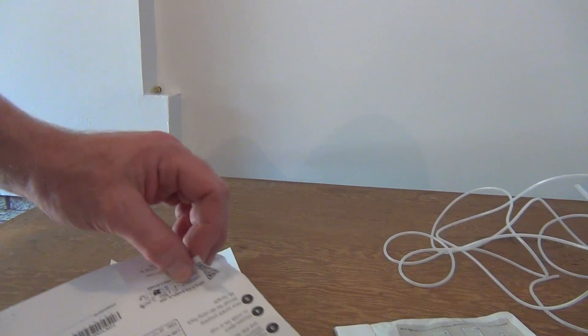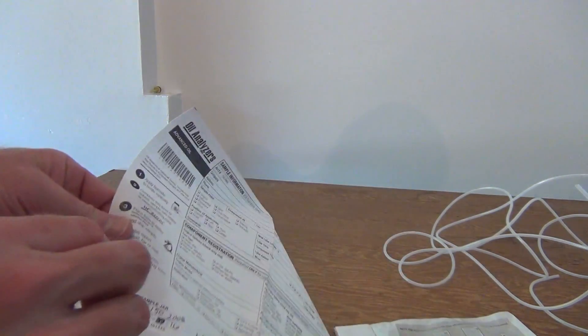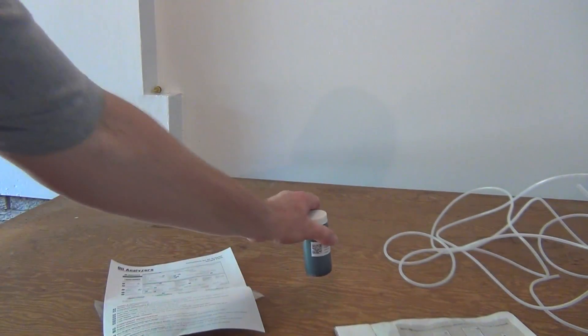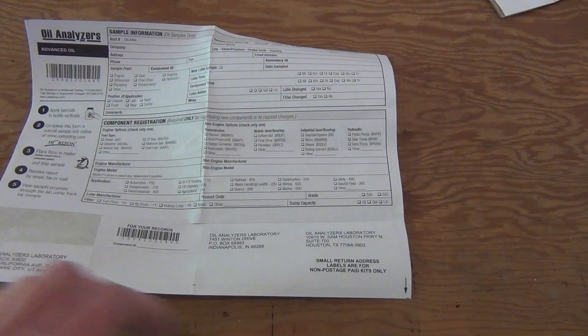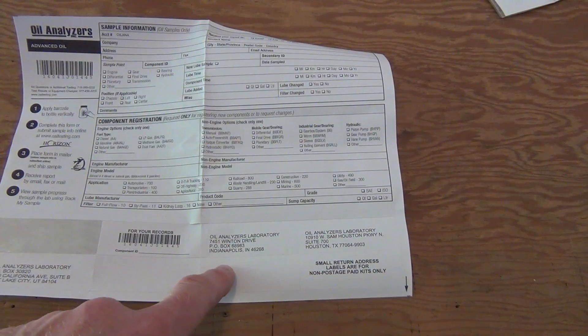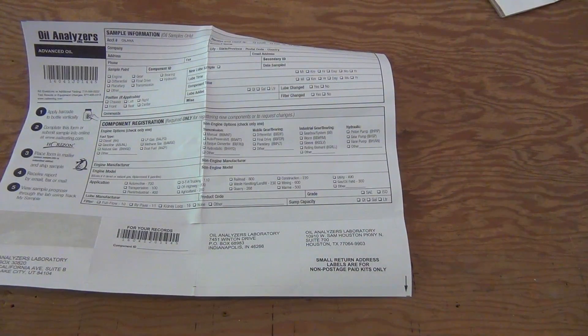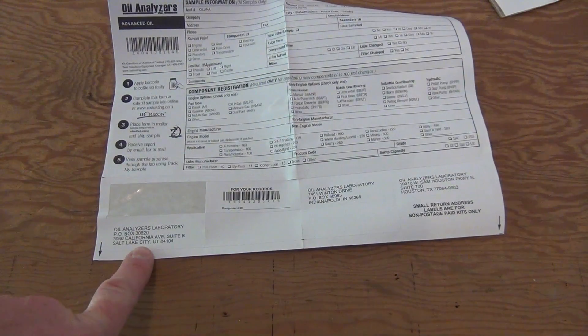Fill out the information sheet that comes with the sample kit and attach the matching stickers to the bottle. Also, I have a couple of different stickers where you send the sample to. This one can go to either Indianapolis or Houston, or looks like another one in Utah.